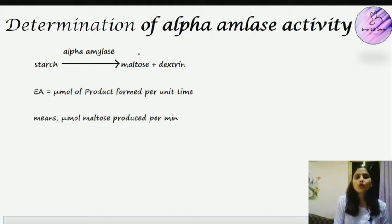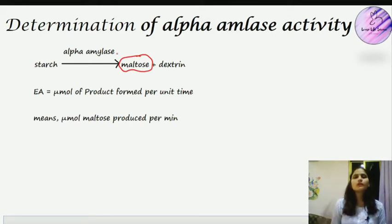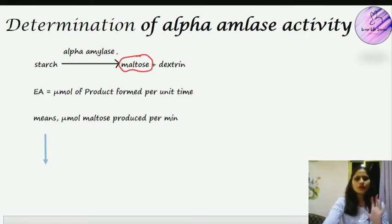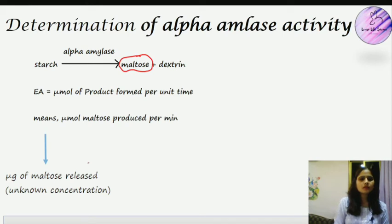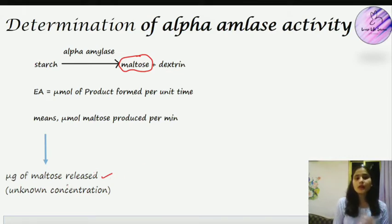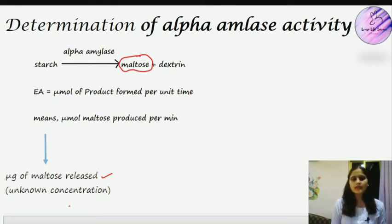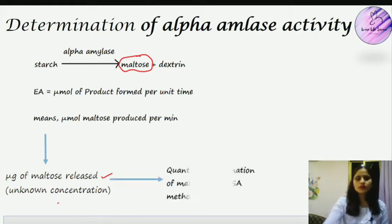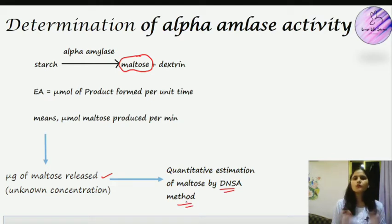Enzyme activity is the micromoles of product formed per unit time (micromoles per minute). For alpha-amylase, the product is maltose. We calculate enzyme activity from the micrograms of maltose released using the DNSA method. The formula will be discussed in detail next.